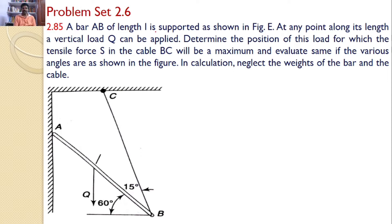A bar AB of length L is supported as shown in the figure. At any point along its length a vertical load Q can be applied. Determine the position of this load for which the tensile force S in the cable BC will be a maximum and evaluate same if the various angles are shown in the figure. In calculation neglect the weights of the bar and the cable.